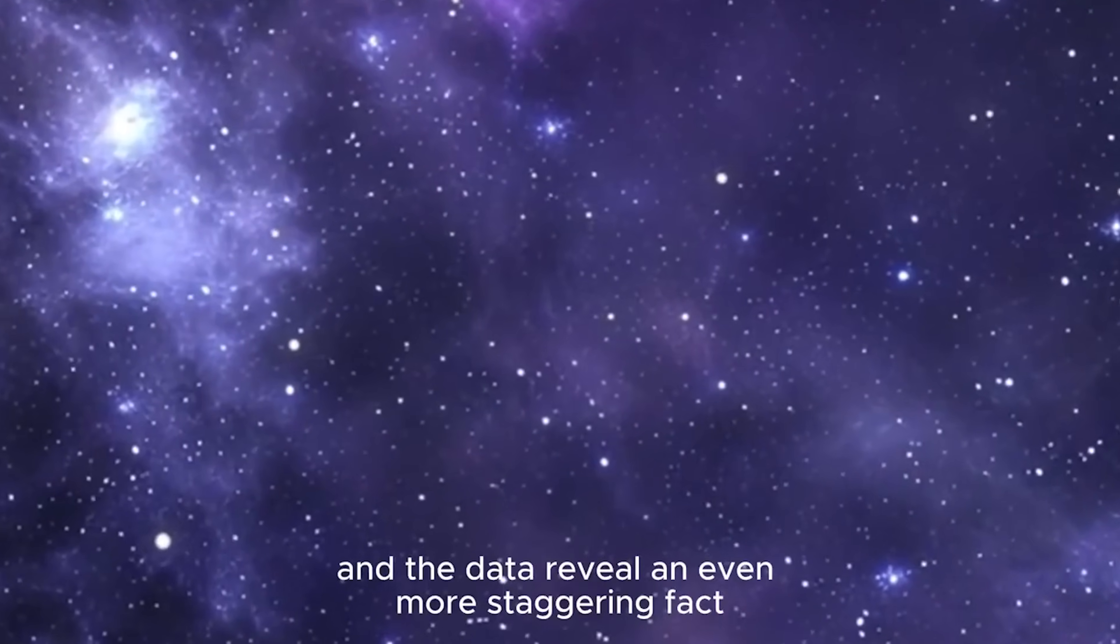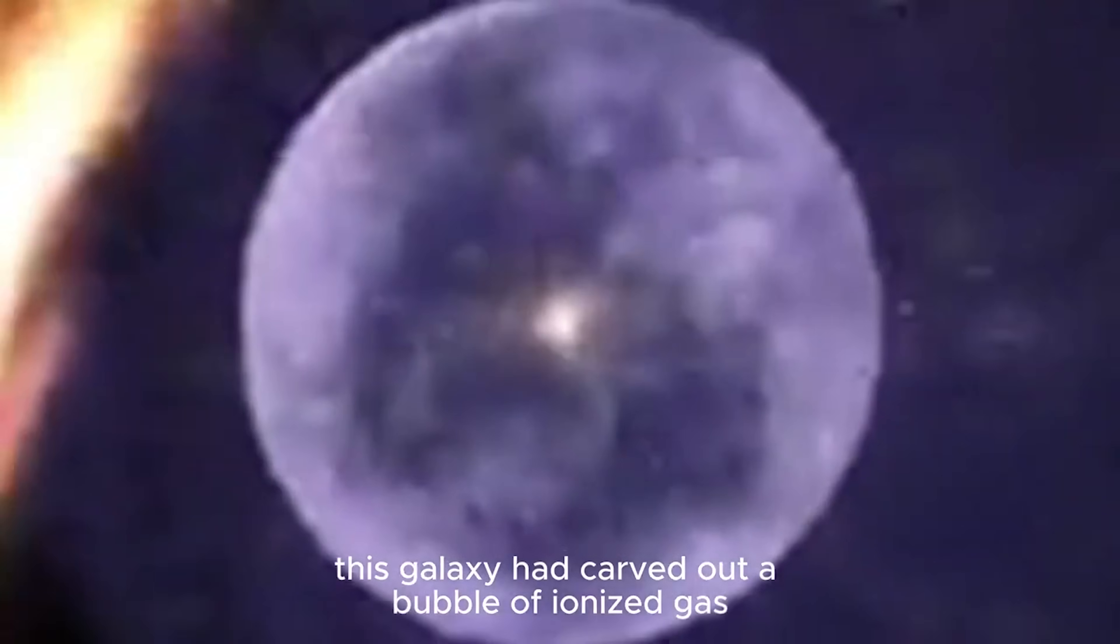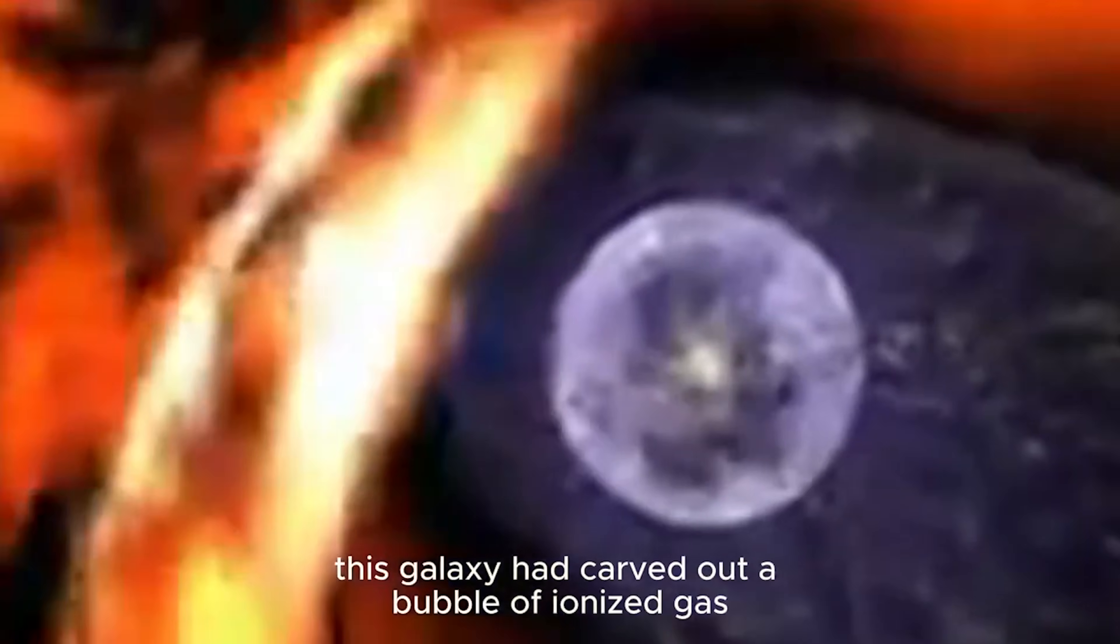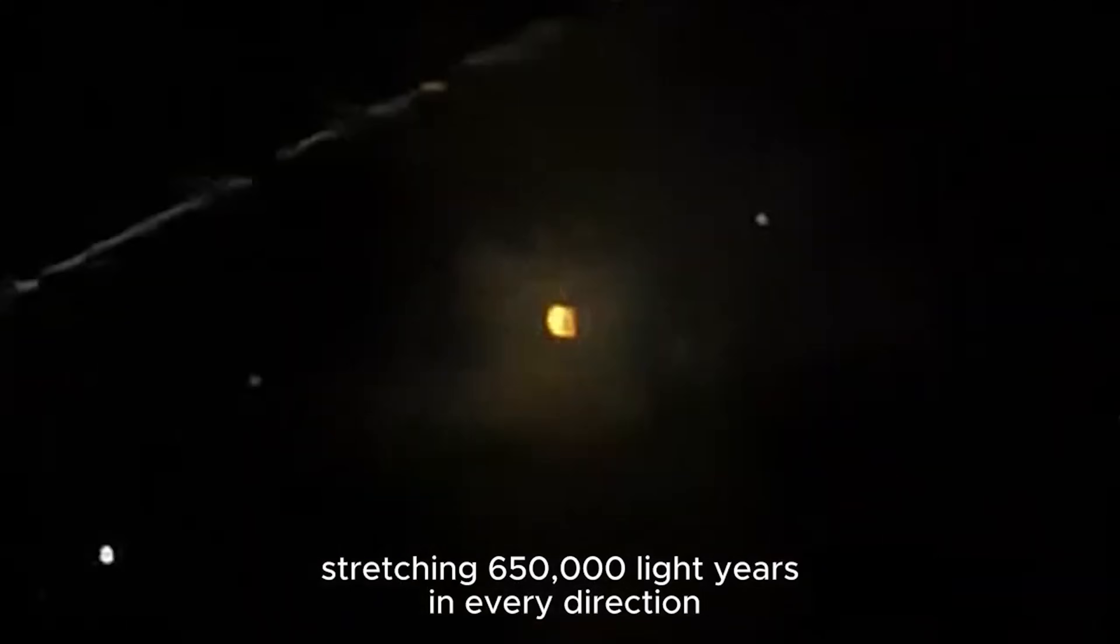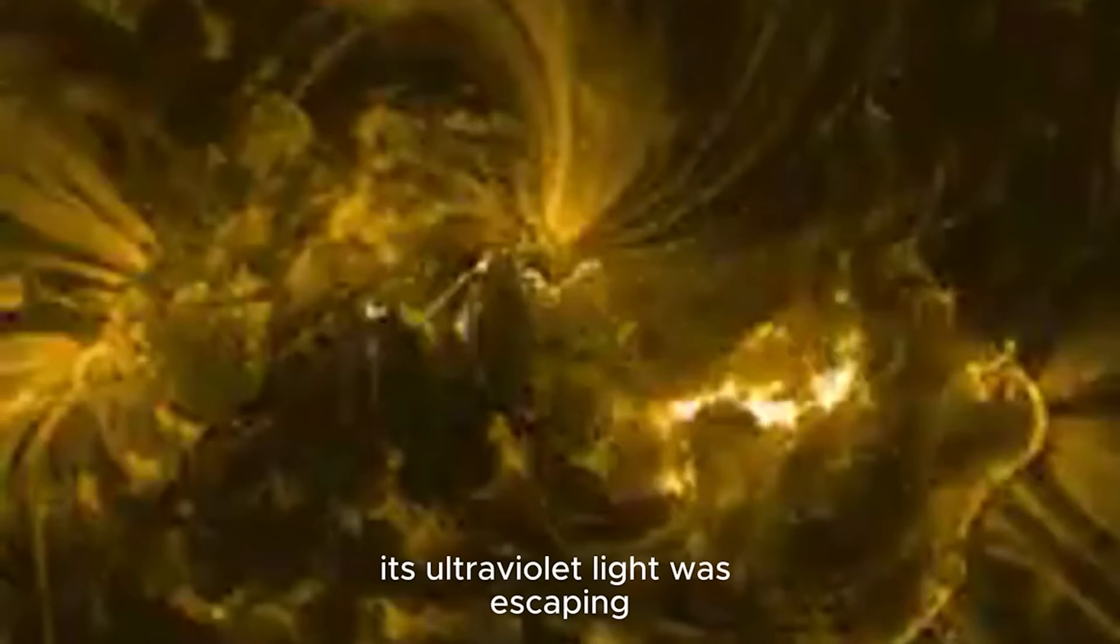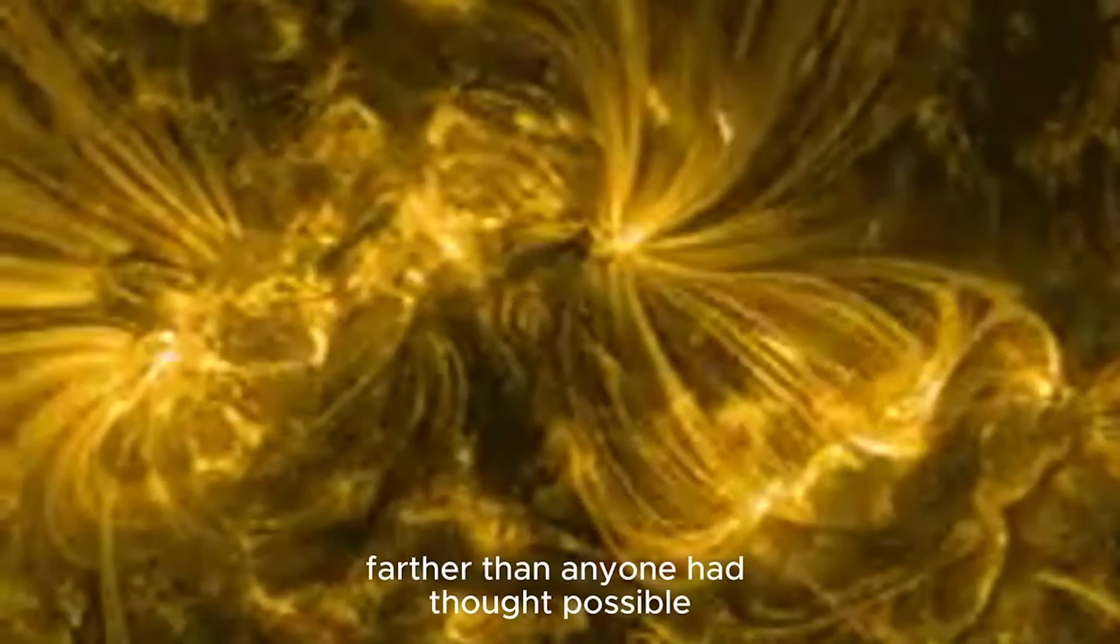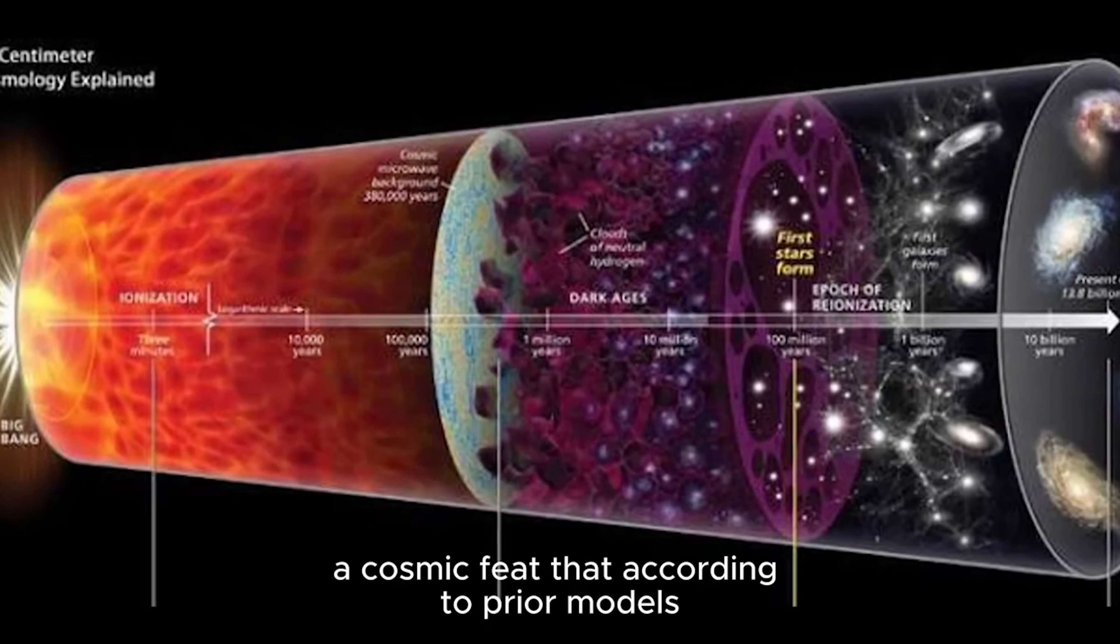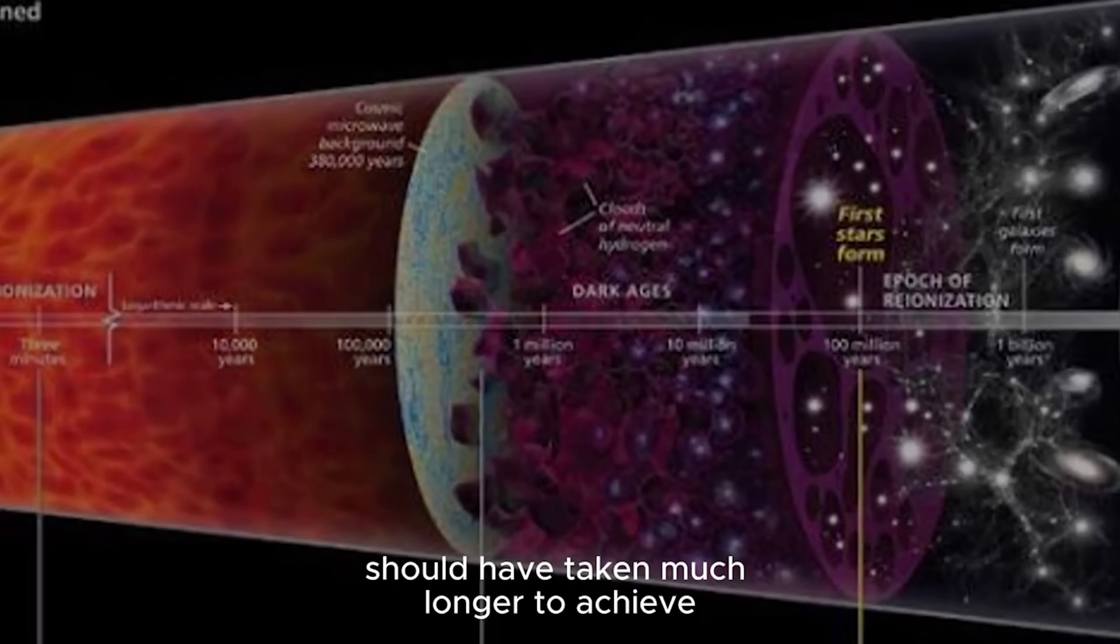But there it is. And the data reveal an even more staggering fact. This galaxy had carved out a bubble of ionized gas stretching 650,000 light years in every direction. Its ultraviolet light was escaping farther than anyone had thought possible, a cosmic feat that, according to prior models, should have taken much longer to achieve.